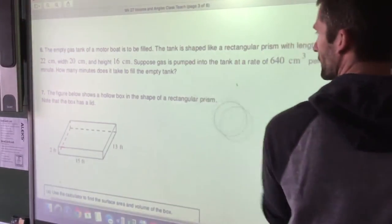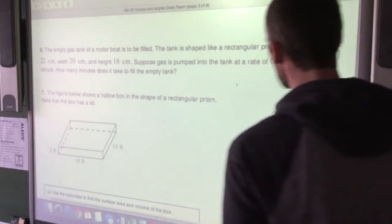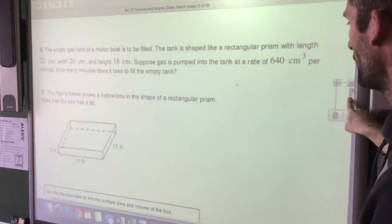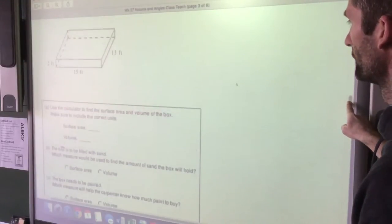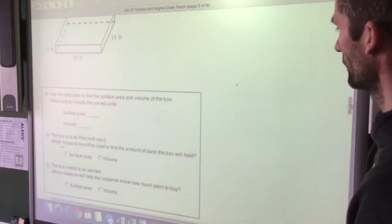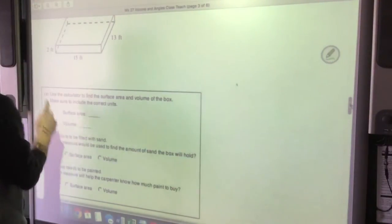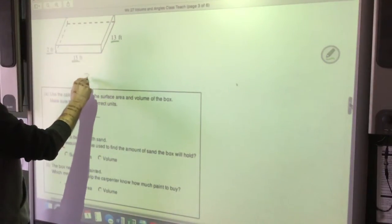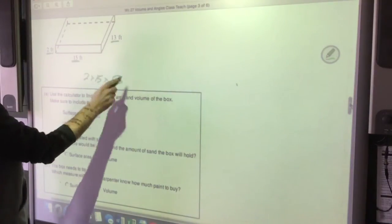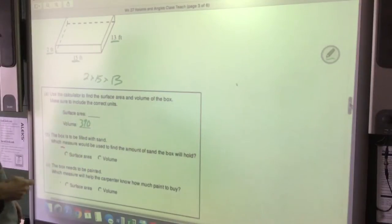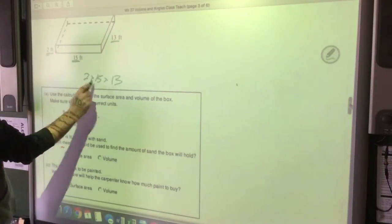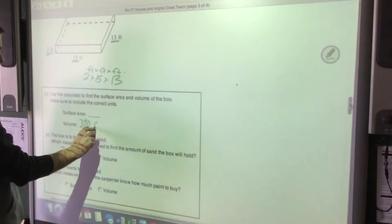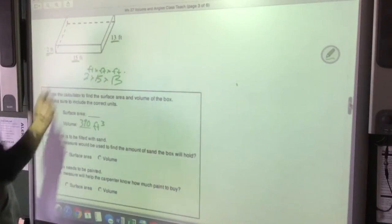Okay, next question. The figure below shows a hollow box, rectangular prism. Note that the box does have a lip. That's important. We're going to find the volume and the surface area both. Okay, so let's do volume first, since that's what we've been doing. Length times width times height, doesn't matter which number we use as which. Two times 15 times 13. Two times 15 is 30, 30 times 13 is 390. Now labels are very important. We're multiplying feet times feet times feet, so that's feet to the power of three, feet cubed. We're talking about the inside.